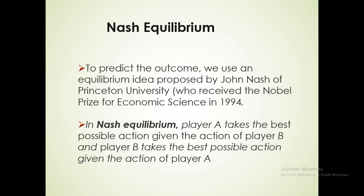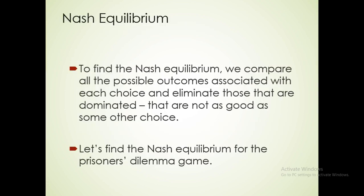Nash equilibrium is a situation where player A takes the best possible action given the action of player B, and the same applies for player B as well. It means that prisoner A will choose a strategy keeping the other prisoner's strategy in mind. To find the Nash equilibrium, we look at all possible outcomes from the payoff matrix and eliminate choices that are dominated — those that are not as good as some other choices.